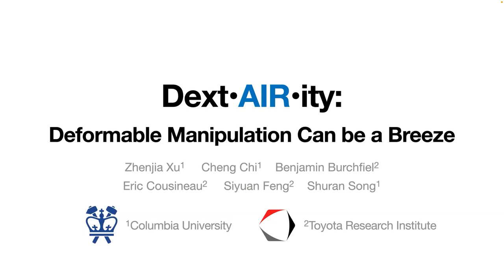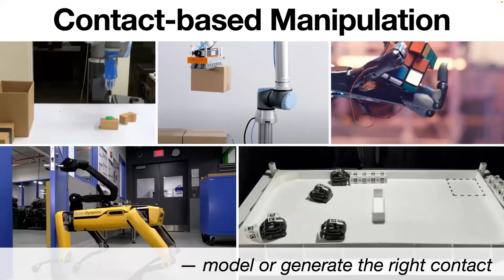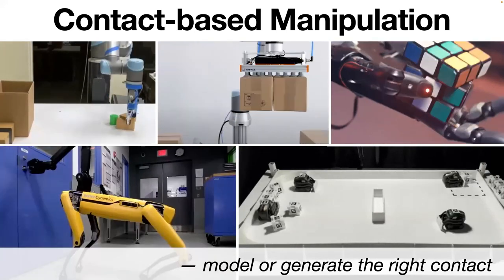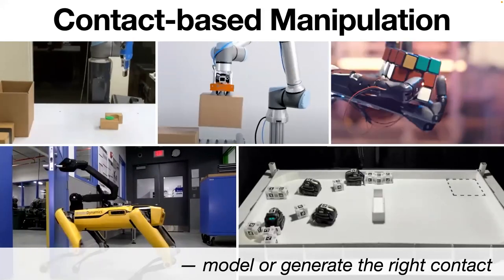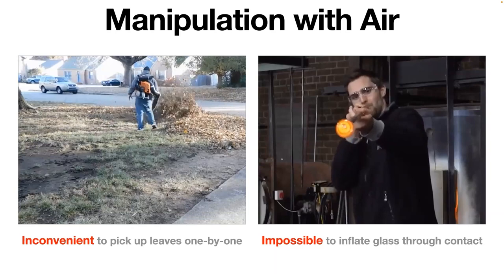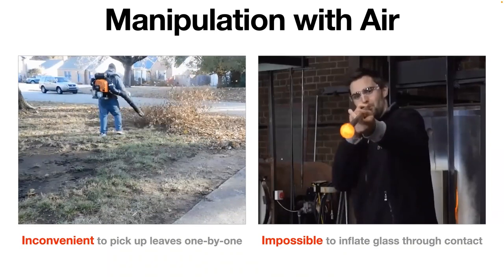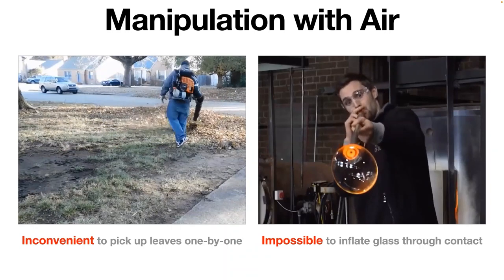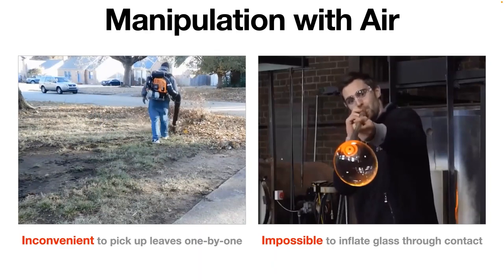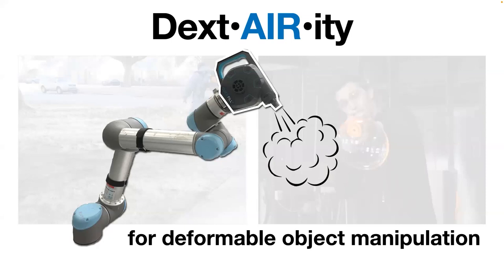My first work is DexAIRity — a new way of robot manipulation using air. When we talk about robot manipulation, it's often all about contacts: how to model or generate the right contacts to interact with objects. However, many common objects in our daily life are either inconvenient or even impossible to manipulate with contacts — like picking up leaves one by one, or inflating a bag with hands. Both tasks can be effectively solved using air. Inspired by this, we want to enable robotic dexterity with air — so we call it DexAIRity.